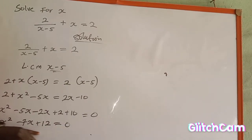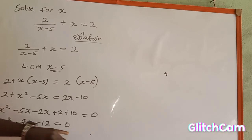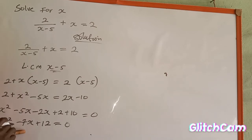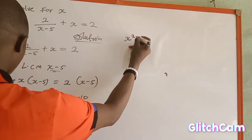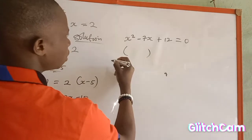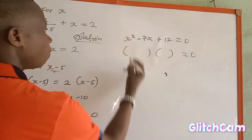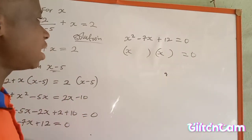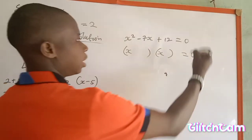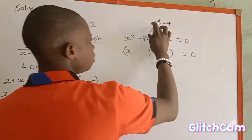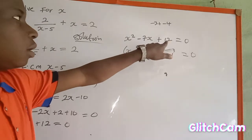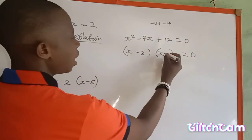This is a quadratic equation and I'll show you the simple factorization method to solve it. The equation is s squared minus 7s plus 12 equals zero. Open two brackets: (s __ )(s __ ) = 0. We think of two numbers that add to give negative 7 and multiply to give positive 12. The numbers are negative 3 and negative 4, because negative 3 plus negative 4 equals negative 7, and negative 3 times negative 4 equals positive 12.